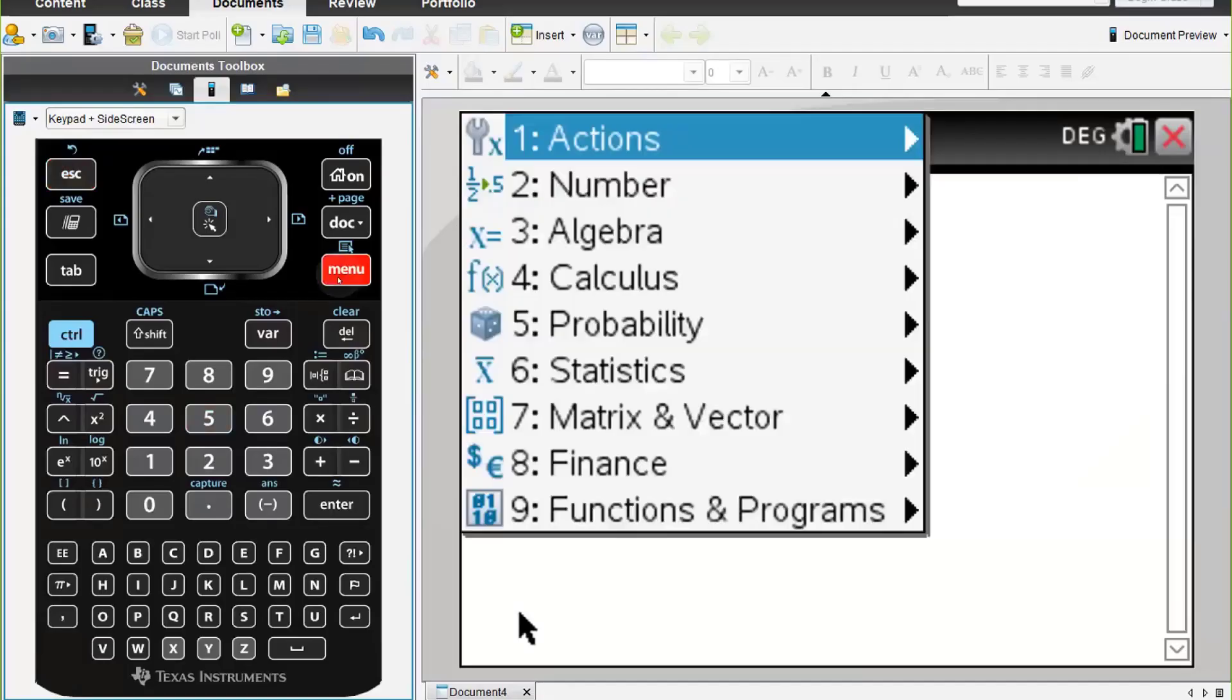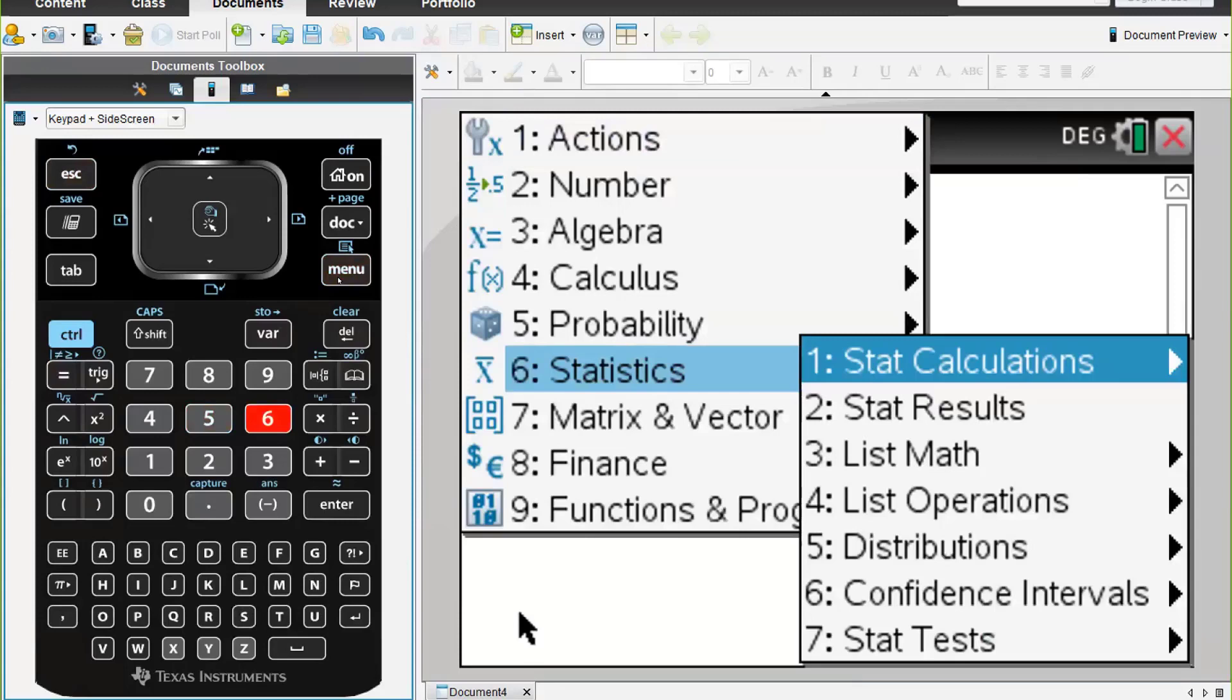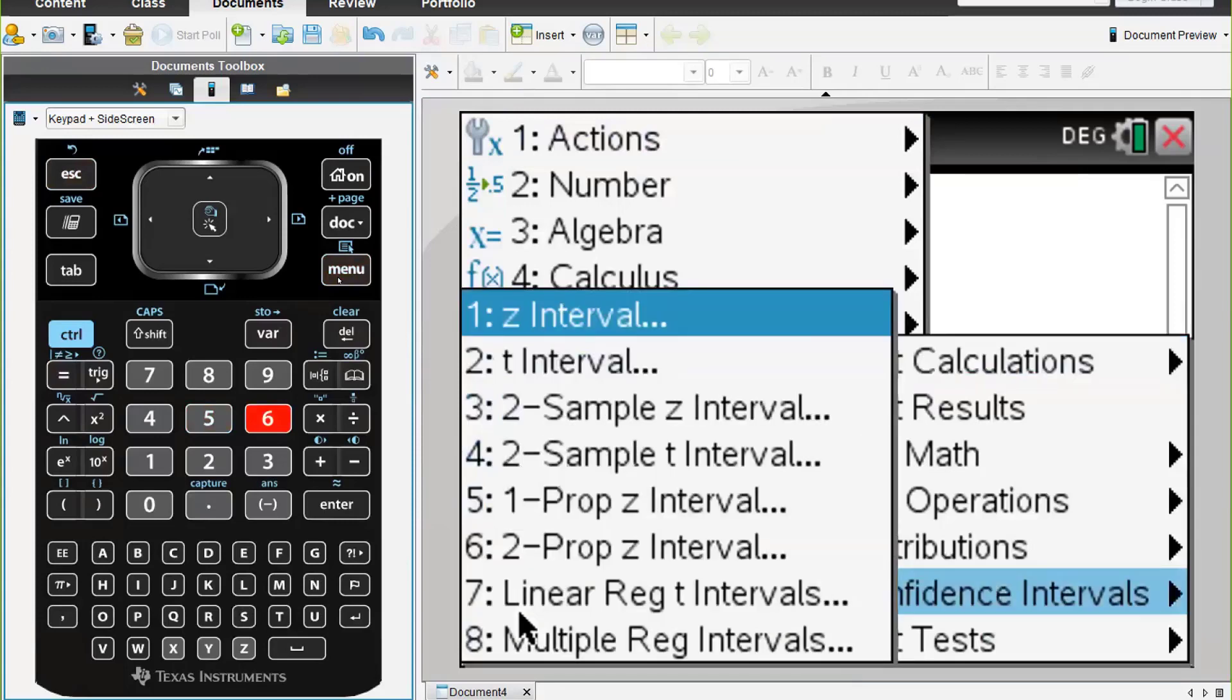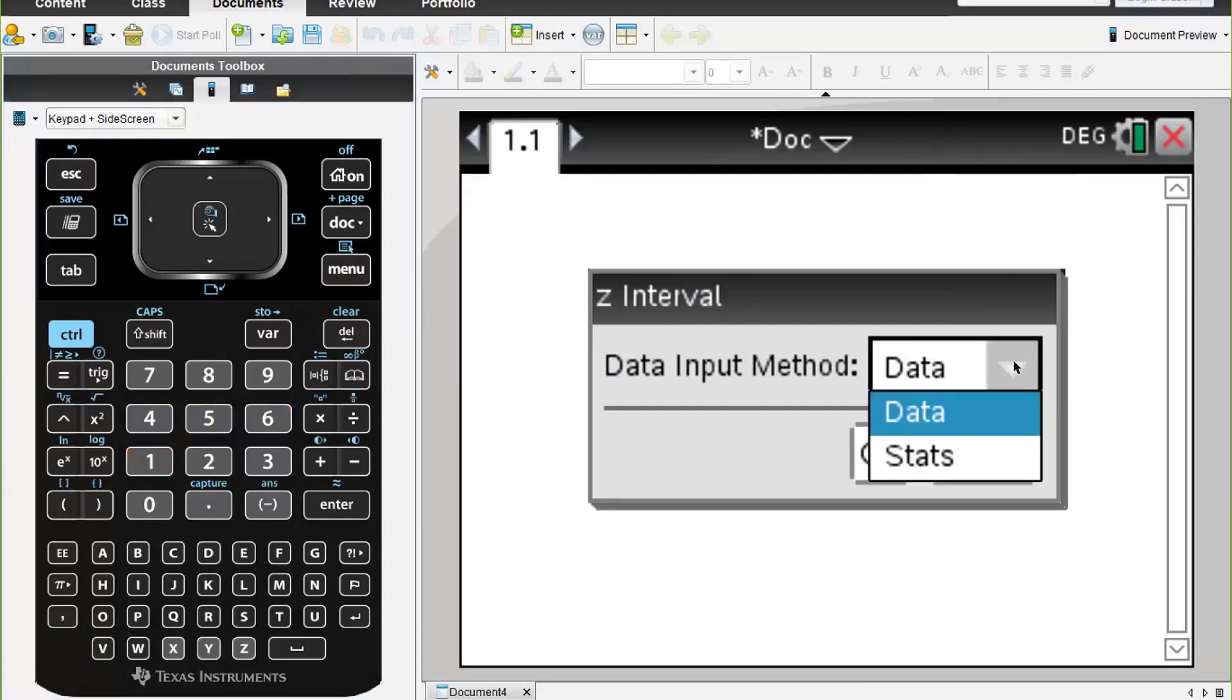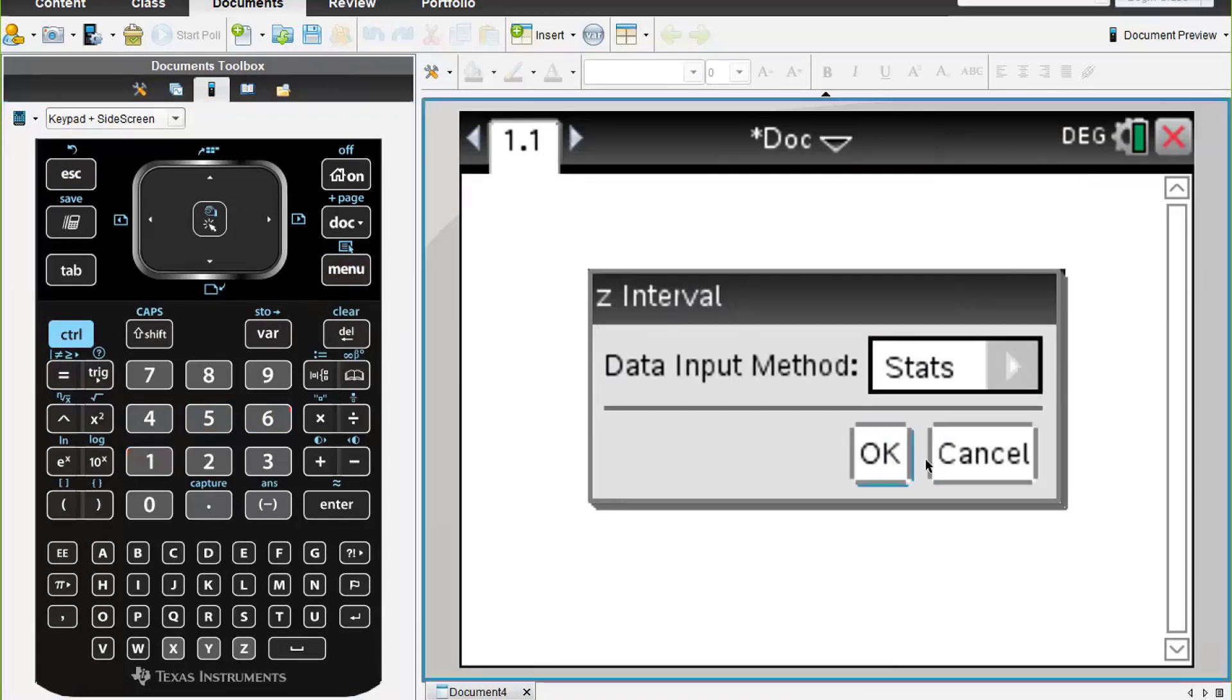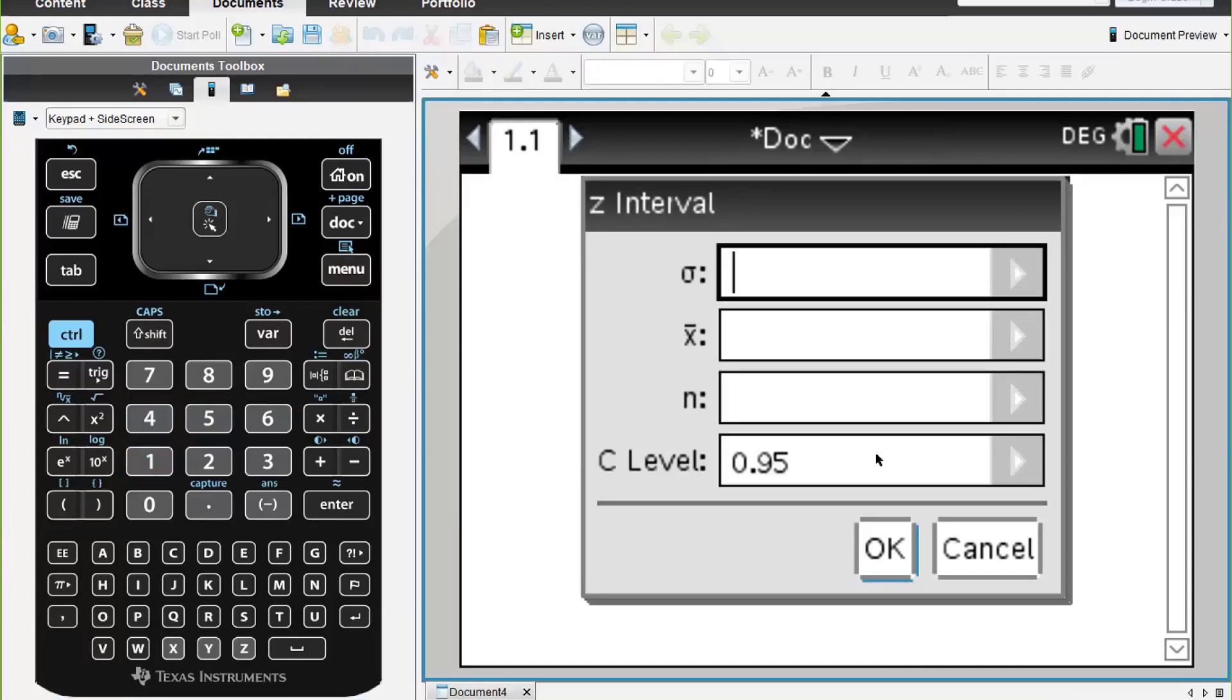Menu 6 Statistics and 6 Confidence Intervals, and we're going to go number 1 z-interval. We're going to put in Stats, and then our standard deviation is 12. Tab down to the next box and the mean, our sample mean was 115. Tab down to the next box, n was 100, and it's already set for 95% confidence interval. We're going to press enter.